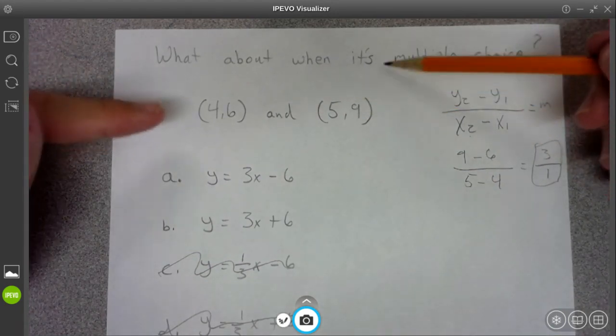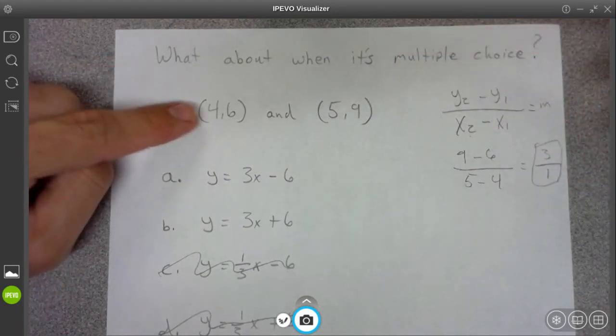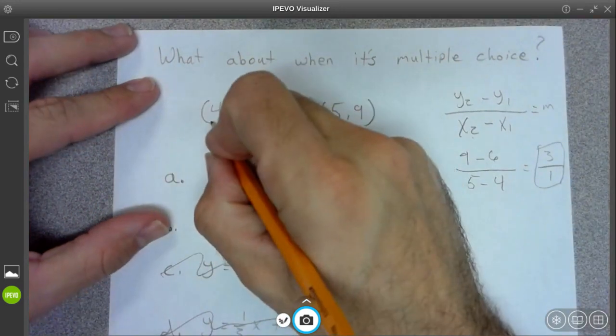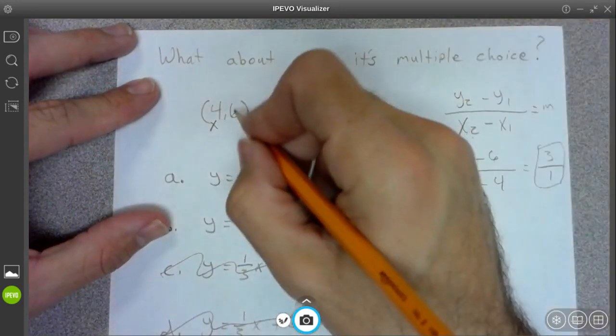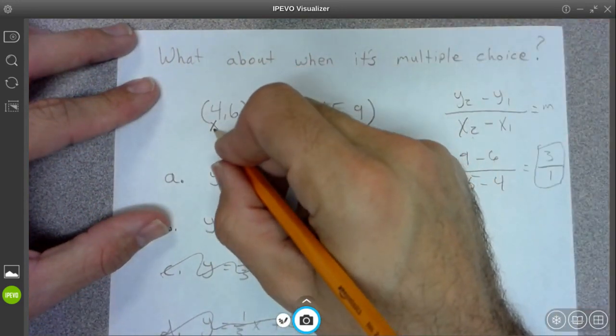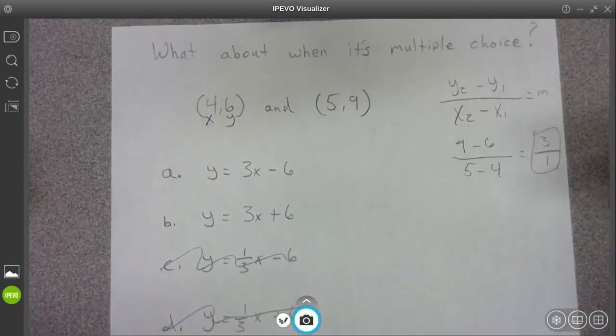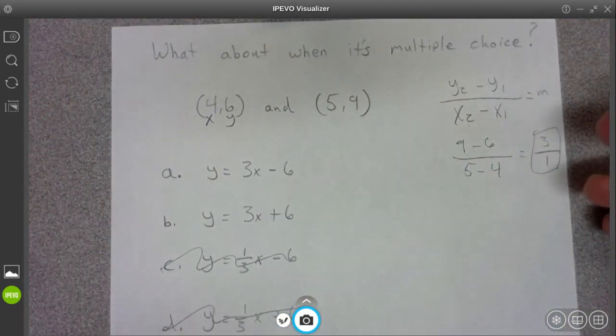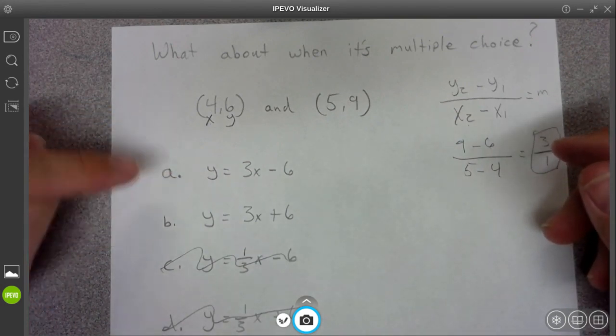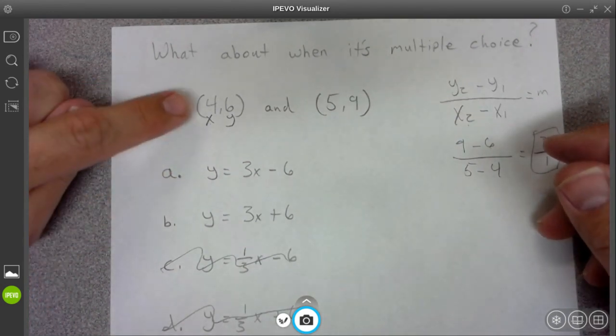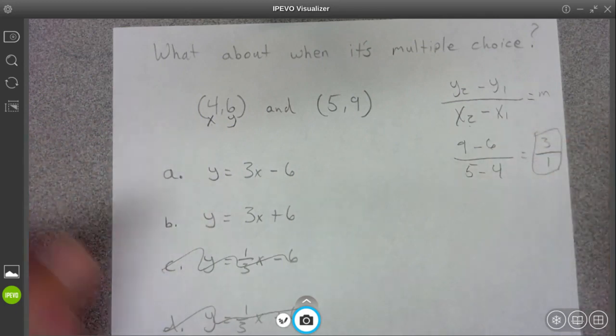Okay, so now I'm going to take either one of these points, I'm probably just going to use this 4, 6, and I'm going to plug 4 in for x, and 6 in for y, and I'm just going to see if the equation balances. Alright, because if the equation balances, that means that that point is on this line.